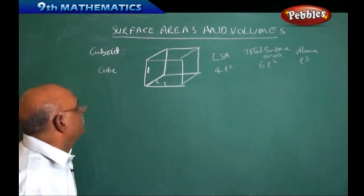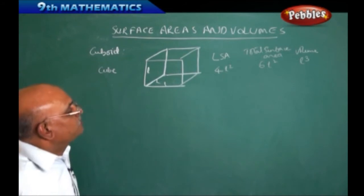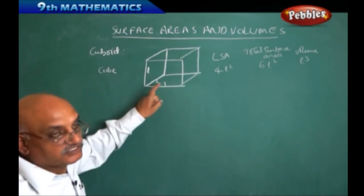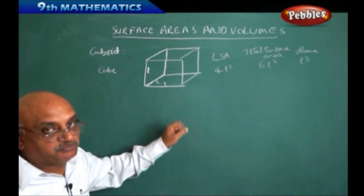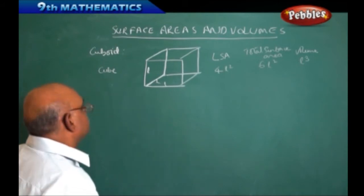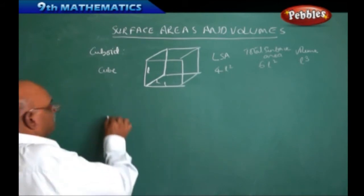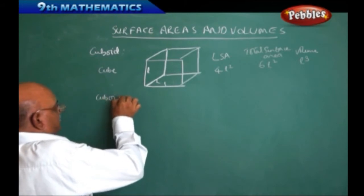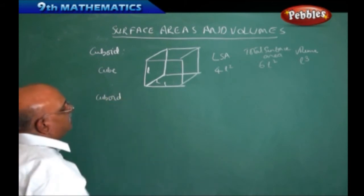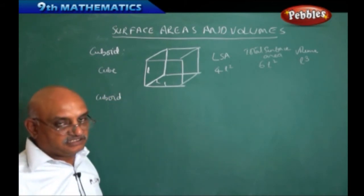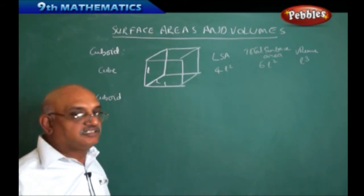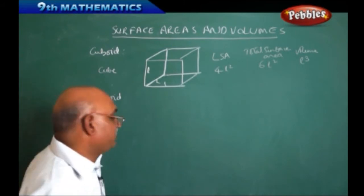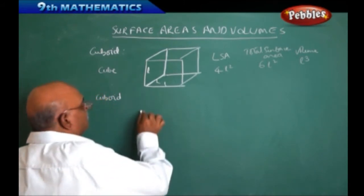This point we have to remember. Now, when sides are equal we are calling it a cube. Our main interest is to think about the cuboid. In the cuboid, one is going to be the length, another is going to be the breadth, and another is going to be the height.